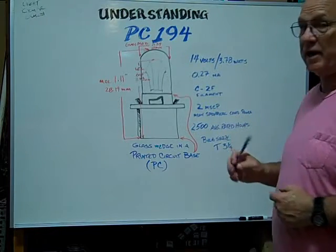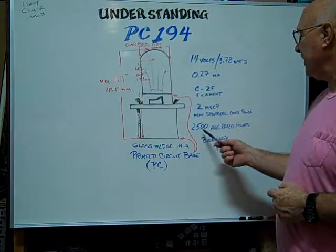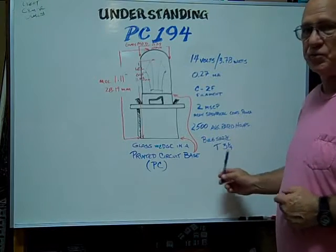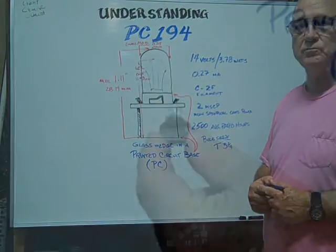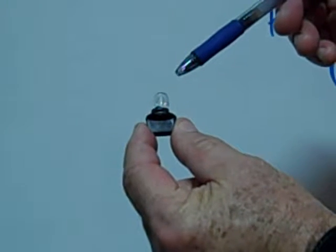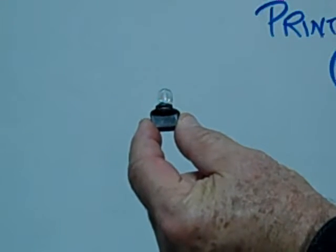The mean spherical candle power is 2. Its average rated hours is 2,500. The bulb shape is a T3.25. This is an example of a PC-194 printed circuit base miniature bulb.